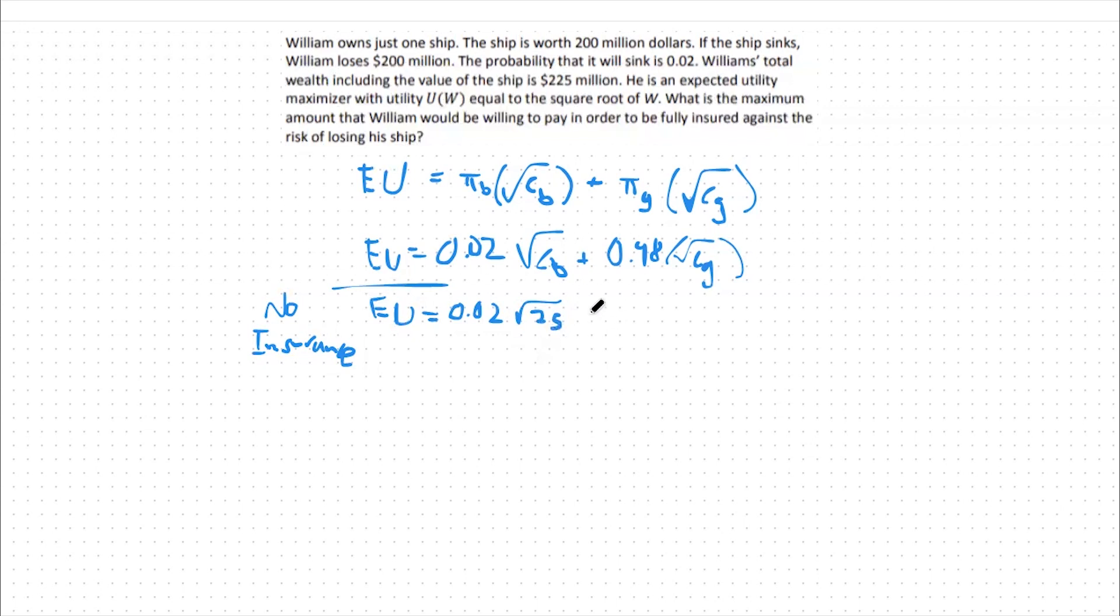So the square root of 25 plus 0.98 times the square root of 225, or the amount of consumption I have in the good state.